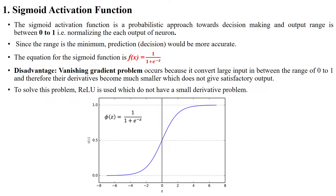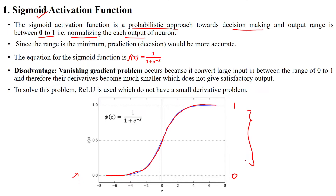Here we have different activation functions. The first one is the sigmoid activation function, which follows a probabilistic approach towards making decisions, and whose output range is from 0 to 1, normalizing each output of the neuron. Looking at this plot, it starts from 0 and crosses at the point of 0.5, which is the threshold value. The maximum output is 1, so the minimum value is 0 and maximum is 1 — that is the range of the sigmoid function.